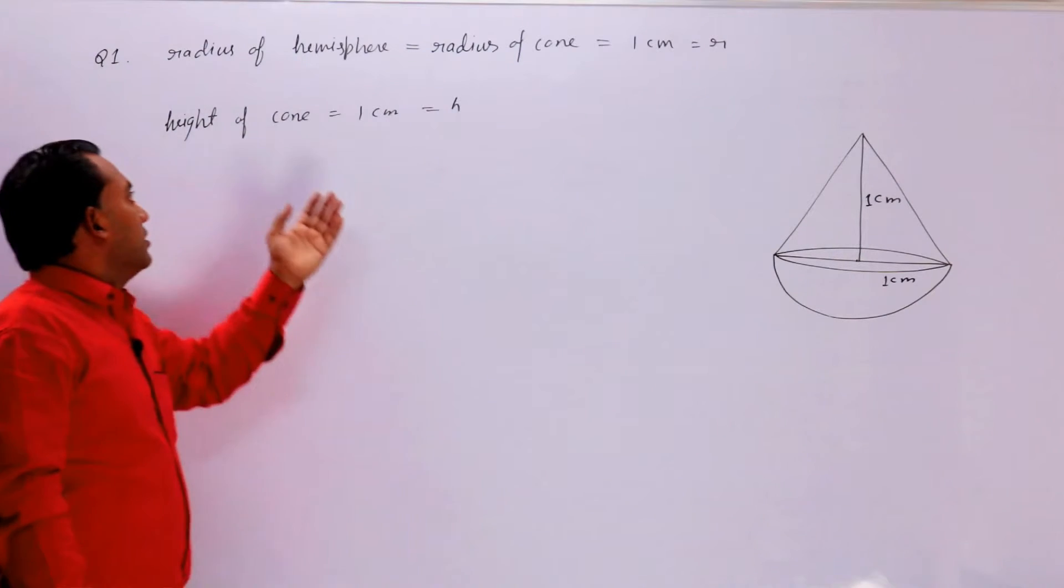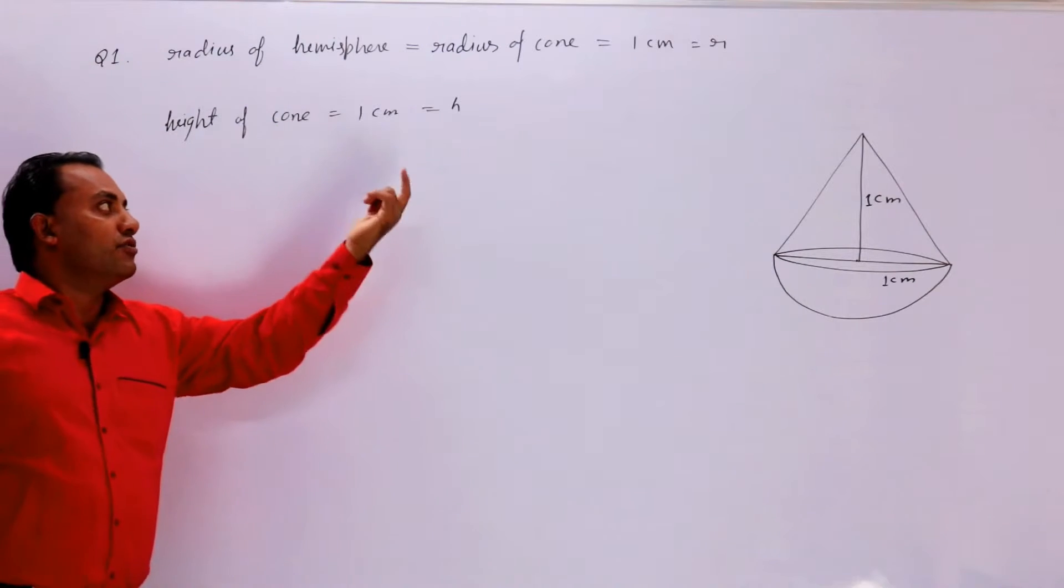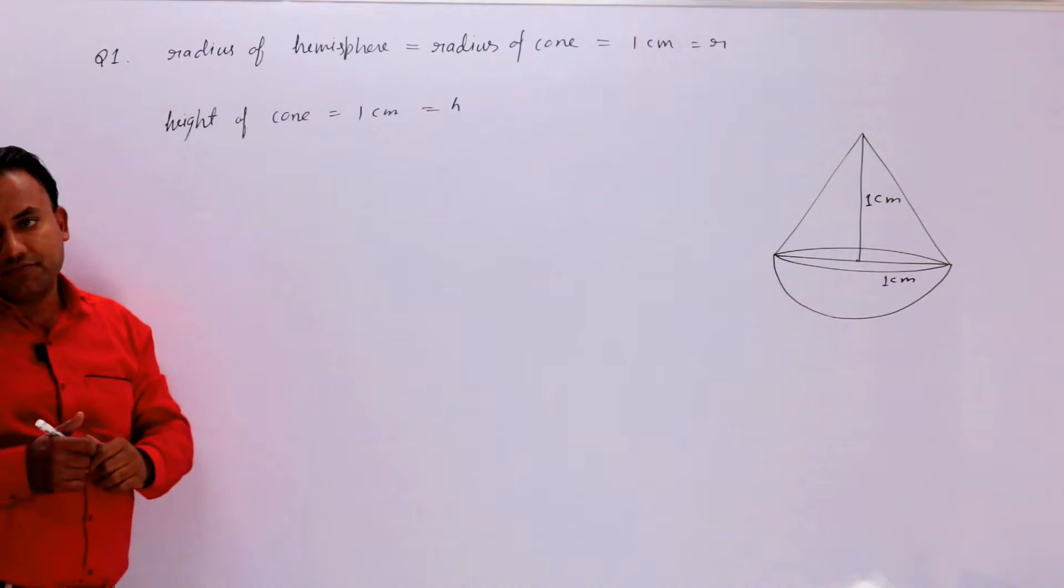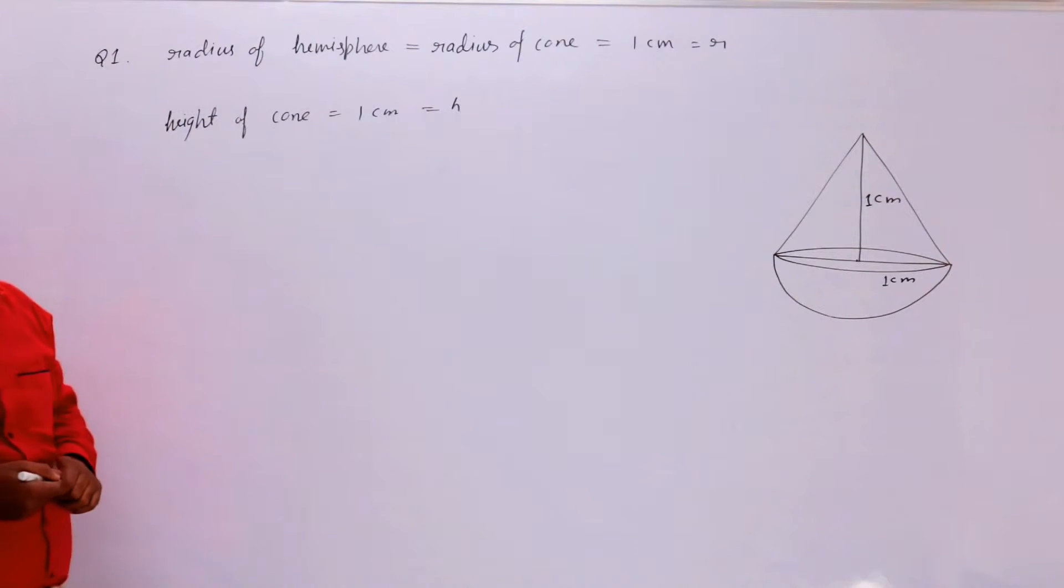तो यहां देख पाएं आप, वह लिख दिया जो दिया हुआ question में. Radius of hemisphere is equal to radius of cone is equal to 1 cm. इसे r मान लिया हमने. Height of cone? 1 cm और इसे h मान लिया. Height को हम ऐसे represent करते हैं.